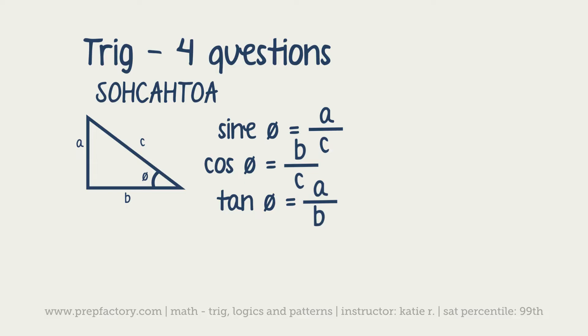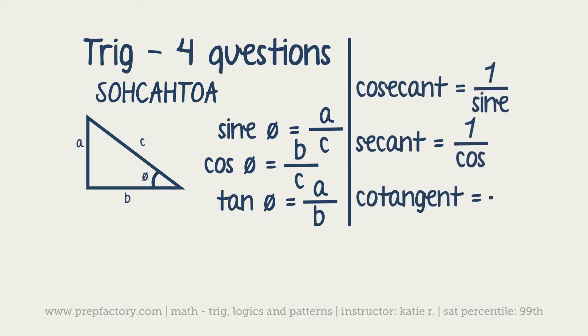You also need to know cosecant, secant, and cotangent, although they're less important than your three basic ones. Cosecant is one over sine, so c over a. Secant is one over cosine, so c over b. And cotangent is b over a.